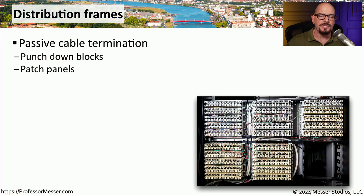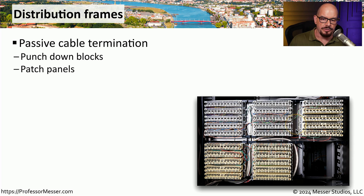A distribution frame is an area of the network where you are passively terminating cables. This usually involves punch down blocks, like the ones we see here, could be patch panels, or any other method where we are terminating those cables, usually in a data center or some other large facility.